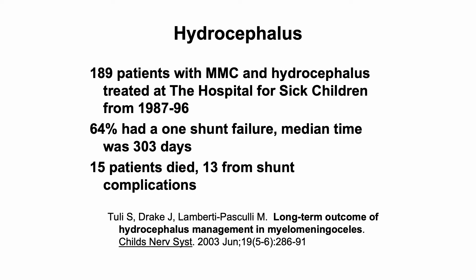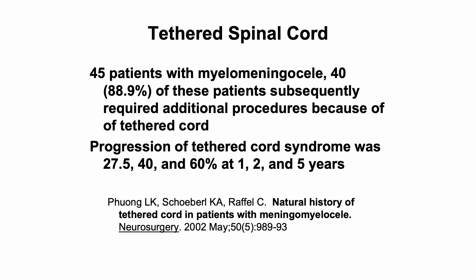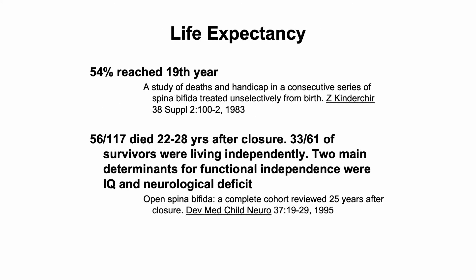A couple of historical papers have outlined the impact of this condition on patients. One paper from the Hospital for Sick Children followed almost 200 patients over a period of time, and almost 15 patients died — 13 from shunt complications — which is a substantial burden of mortality for this diagnosis. In another paper, 45 patients with myelomeningocele were followed and required surgical intervention for a tethered spinal cord at a fairly high rate in the first several years of life.